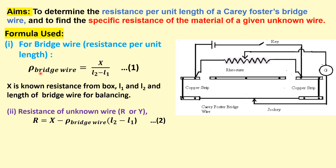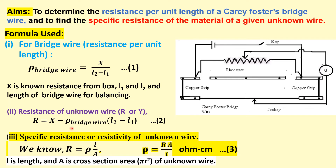We will use this Rho for the calculation of specifications of the unknown wire. First, we measure the resistance of the unknown wire using the formula: R equal to x minus Rho of bridge wire multiplied by (L2 minus L1).